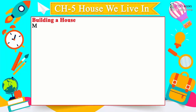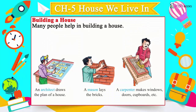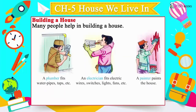Many people help in building a house. An architect draws the plan of a house. A mason lays the bricks. A carpenter makes windows, doors, cupboards, etc. A plumber fits water pipes, taps, etc. An electrician fits electric wires, switches, lights, fans, etc. A painter paints the house.